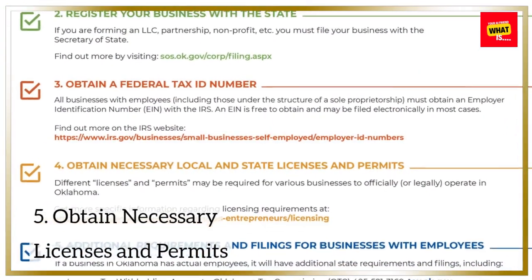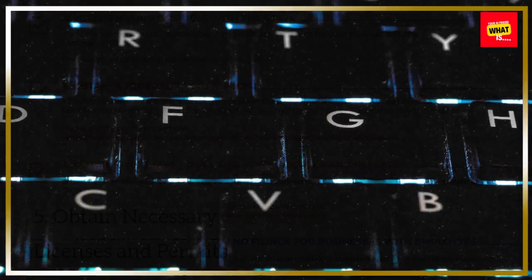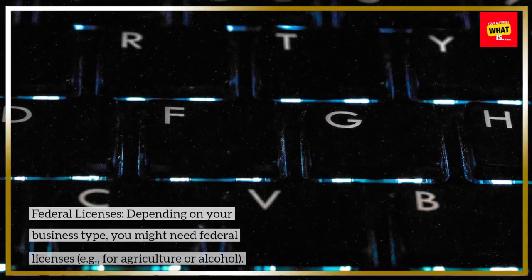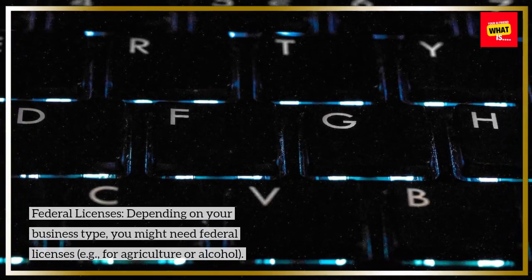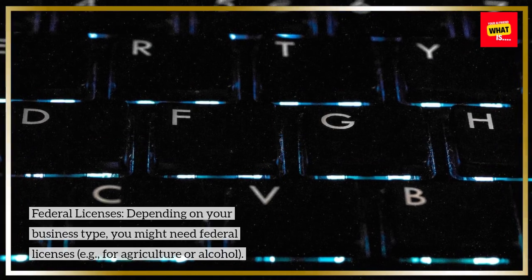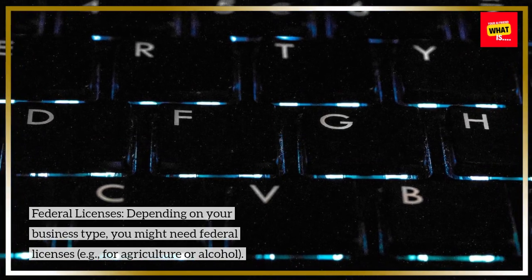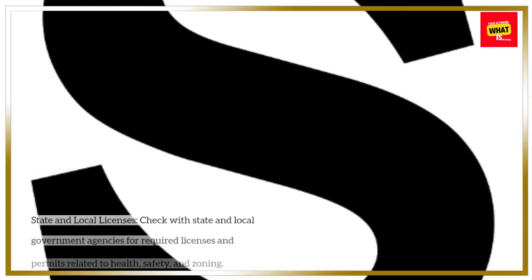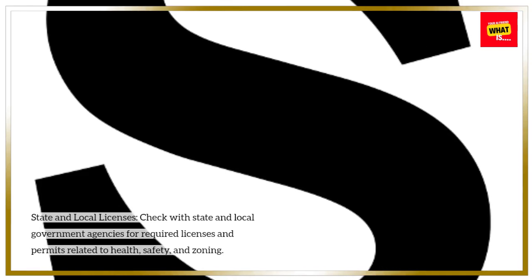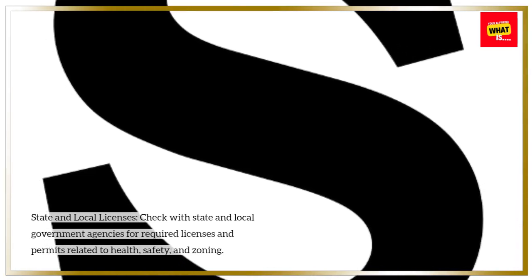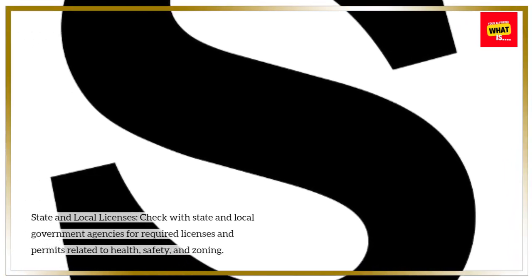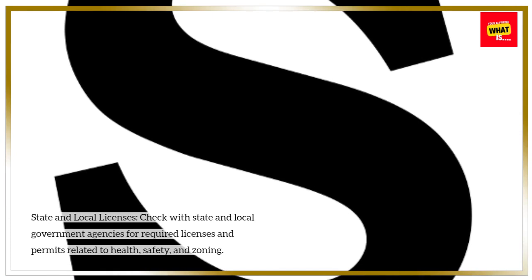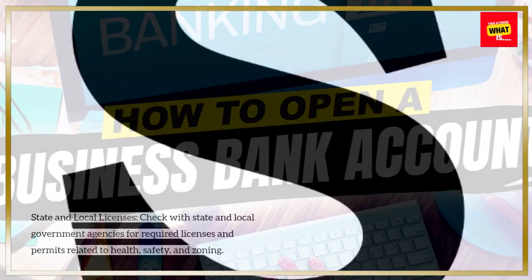Step 5: Obtain Necessary Licenses and Permits. Federal licenses — depending on your business type, you might need federal licenses, e.g., for agriculture or alcohol. State and Local Licenses — check with state and local government agencies for required licenses and permits related to health, safety, and zoning.